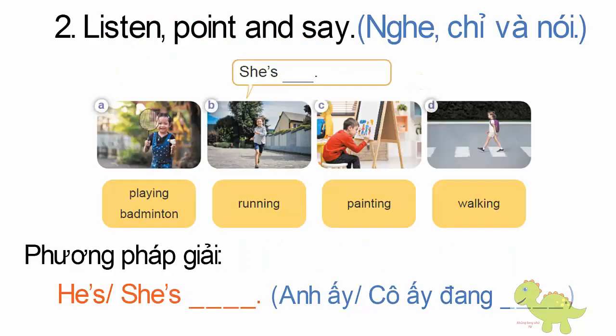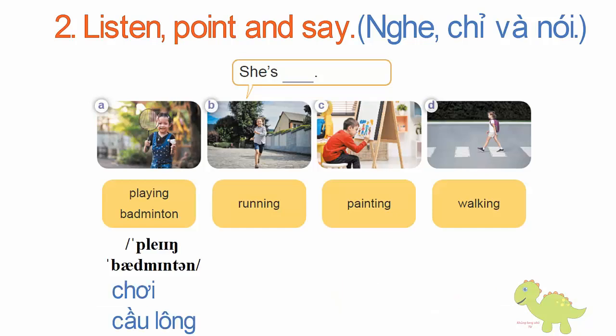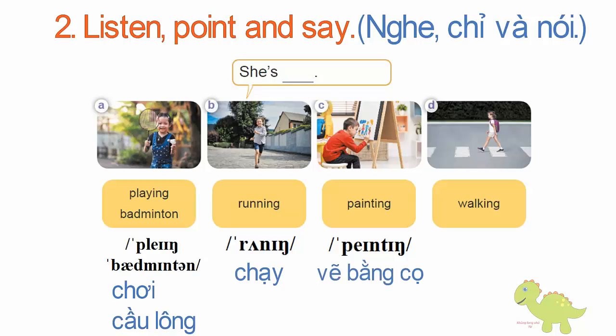Page 58, Lesson 1, Activity 2. Listen, point and say. A. Playing badminton. B. Running. C. Painting. D. Walking.